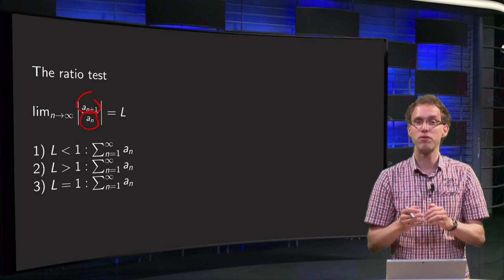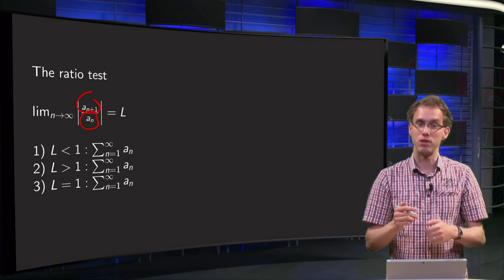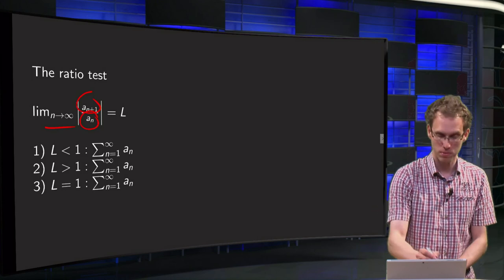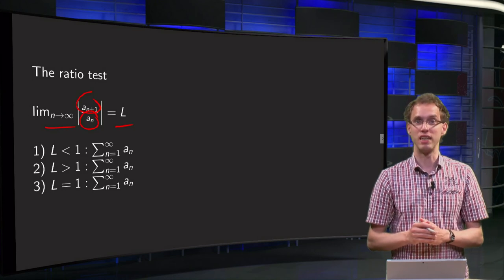So you take a_{n+1} divided by a_n, you take the absolute value. I want to look into the tail, so you take the limit then to infinity and you compute this limit, suppose it is called L. And now you can have three cases.